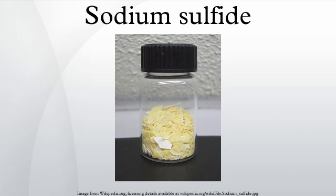Although the solid is yellow, solutions of it are colorless. Na2S adopts the anti-fluorite structure, which means that the Na+ centers occupy sites of the fluoride in the CaF2 framework, and the larger S2- occupy the sites for Ca2+.